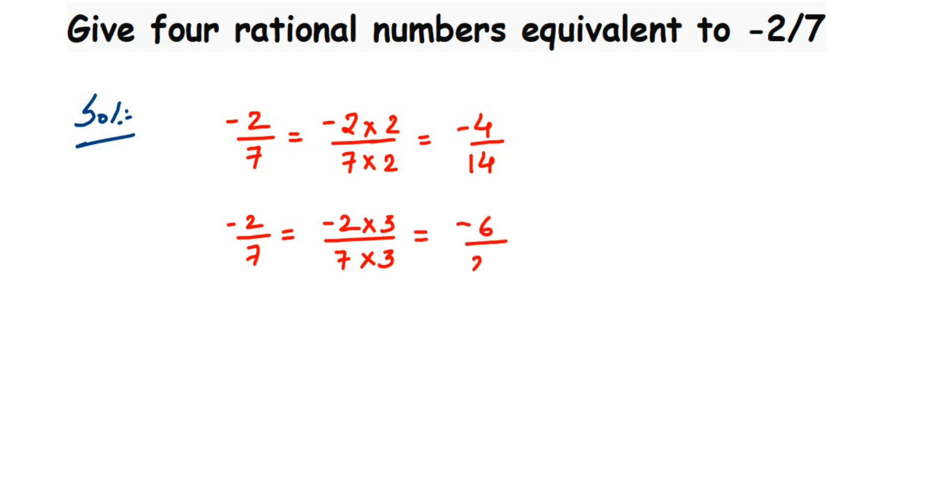Like that you can take any number. So let me take here 5 now. Minus 2 by 7, I am going to multiply with 5 in the numerator and denominator. This is equal to minus 10 by 35.